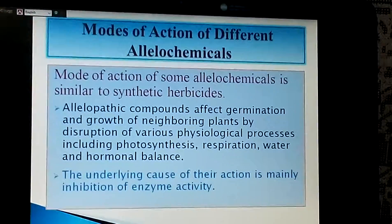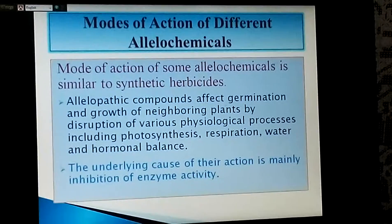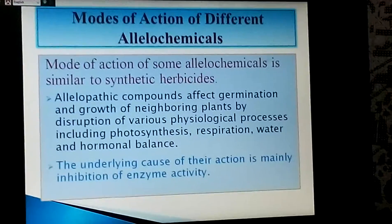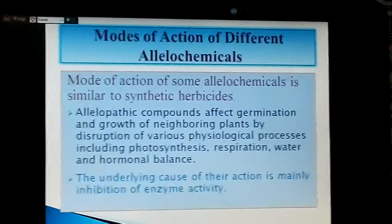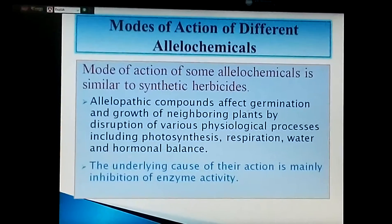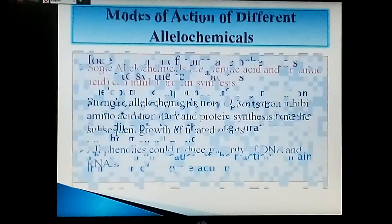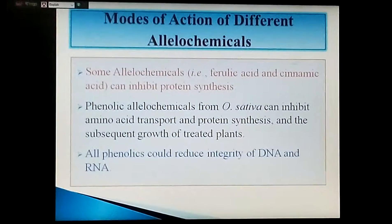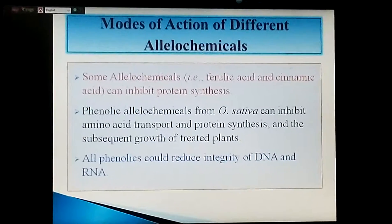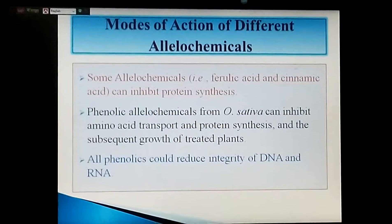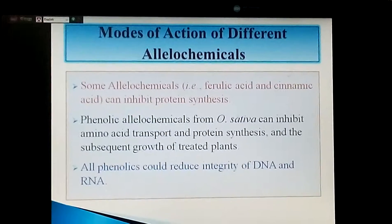Modes of action of different allelochemicals: the mode of action of some allelochemicals is similar to synthetic herbicides. Allelopathic compounds affect germination and growth of neighboring plants by disruption of various physiological processes including photosynthesis, respiration, water balance, and hormonal balance. The underlying cause of their action is mainly inhibition of enzyme activity. Some allelochemicals can inhibit protein synthesis. Phenolic allelochemicals from Festuca rubra can inhibit amino acid transport and protein synthesis, and all phenolics could reduce the integrity of DNA and RNA.